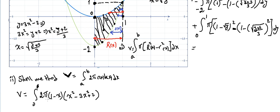This is the integral from 0 to 1 of 2π. What is the radius? Since it rotates around x = 1, the radius is 1 minus x. And what is the height? The height is the difference between the two curves — the upper curve minus the lower curve, which is x squared minus (3x squared minus 2), or minus 3x squared plus 2, expanding it directly dx.